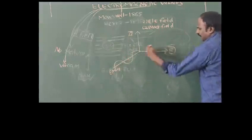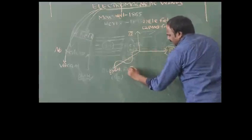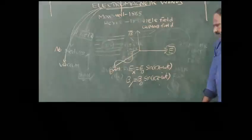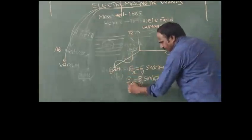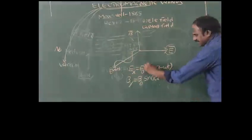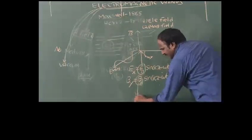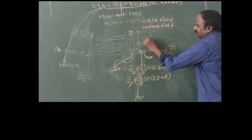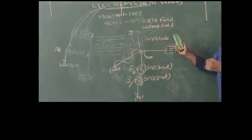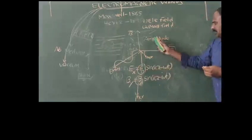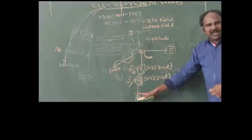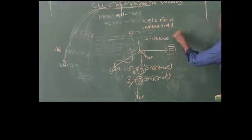The electric field acting along the x-axis is given by Ex = E₀ sin(kx − ωt), and the magnetic field acting along the y-axis is given by By = B₀ sin(kx − ωt). Here Ex indicates electric field along x-axis, By indicates magnetic field along y-axis, E₀ is the amplitude of the electric field, B₀ is the amplitude of the magnetic field, and the constant k is called the wave constant.